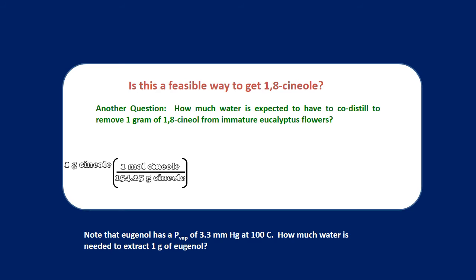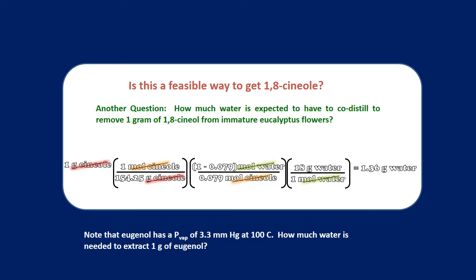Well, I know that there is a molar mass of 154.25 grams per mole for that particular compound. I also know from my previous calculation that the mole fraction in the vapor phase is going to be 0.079 moles of oil per mole of total gas moving through my still. Next, I add a factor to calculate for the mass of water and my unit analysis tells me that this calculation will tell me exactly how much water is required to remove that one gram of oil. And in this case, it's only about 1.36 grams.